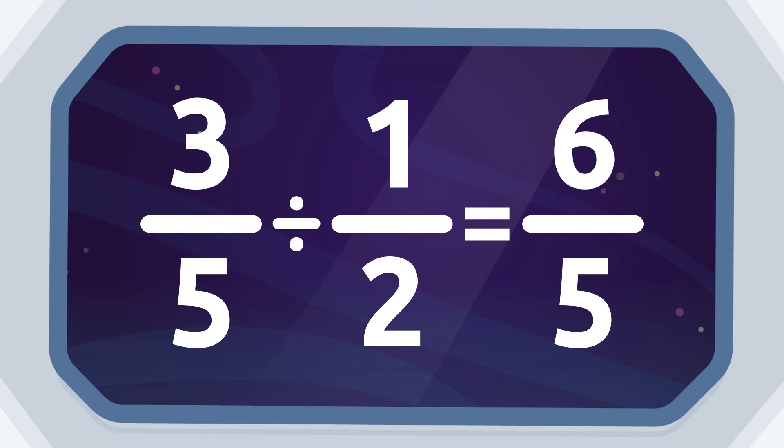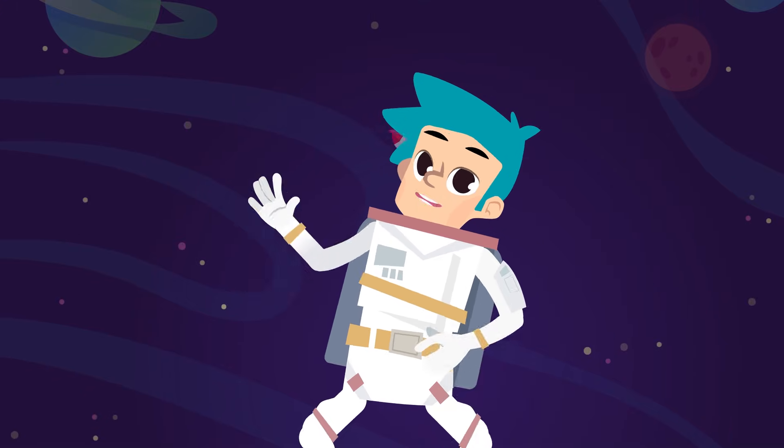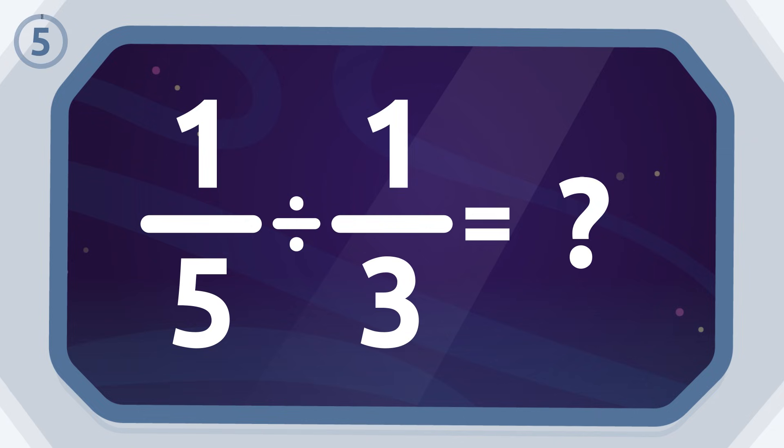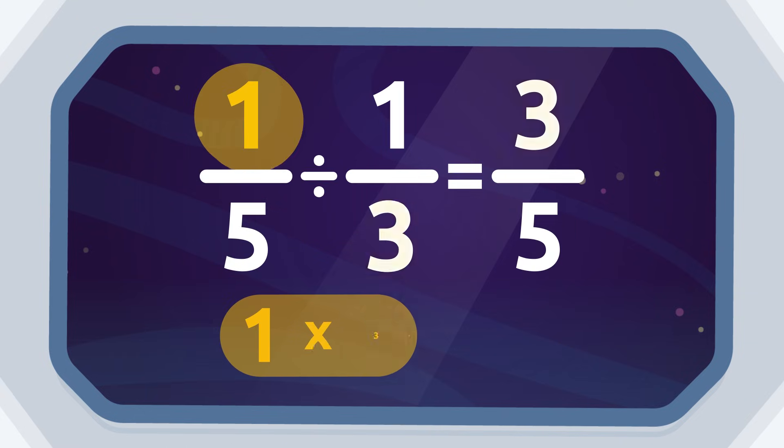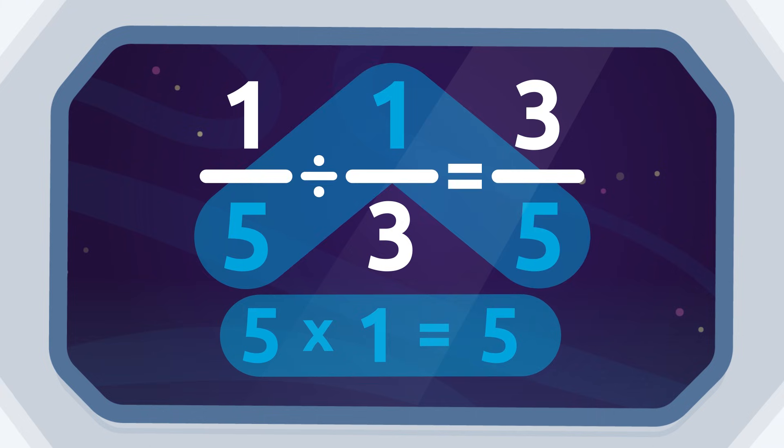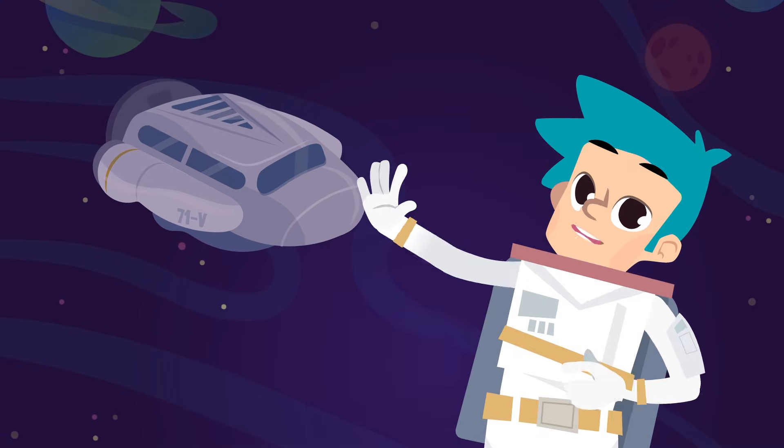Let's look at the next example. Would you like to try doing this one yourself? One-fifth divided by one-third equals... Let's find out if you got it right. One-fifth divided by one-third equals three-fifths. Great job!